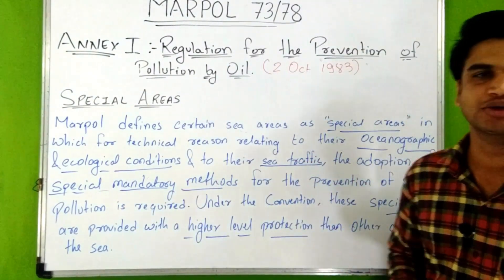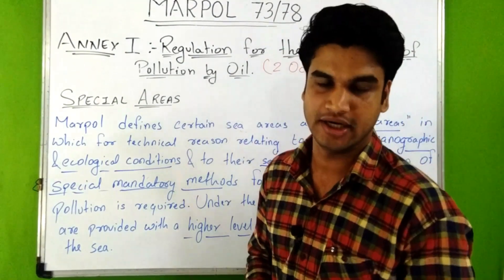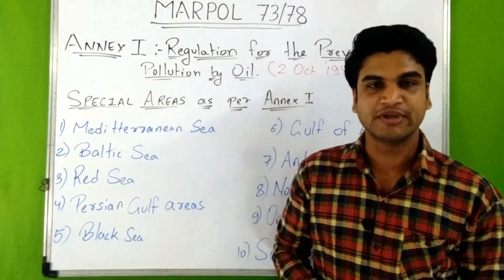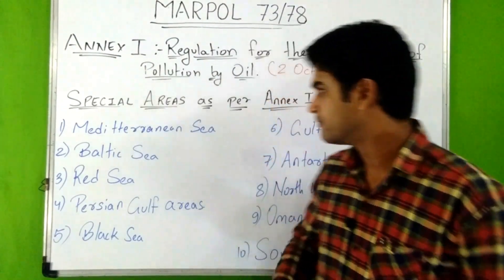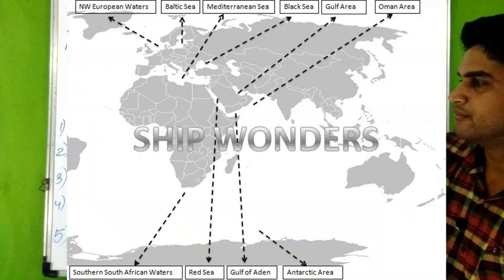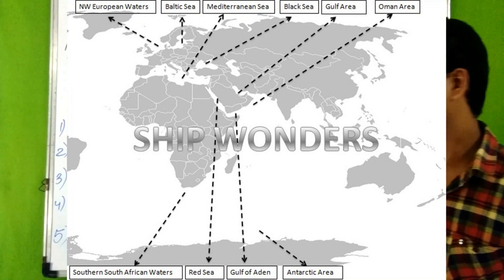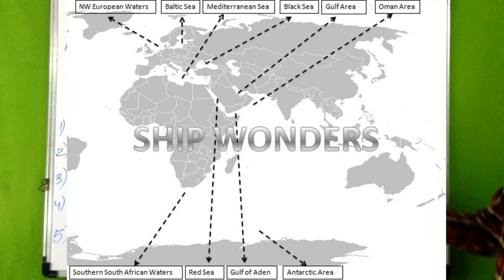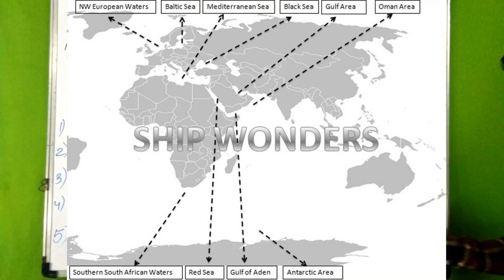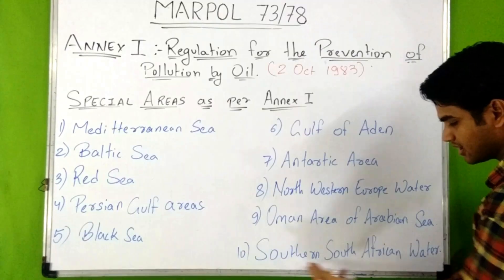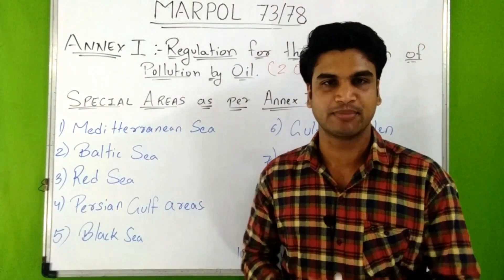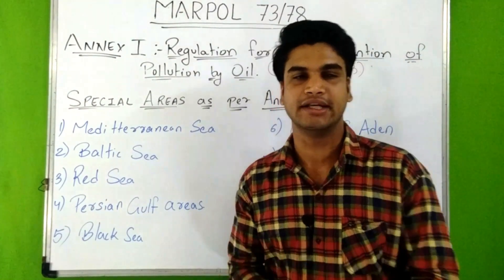The special areas under Annex 1 are: the Mediterranean Sea, Baltic Sea, Red Sea, Persian Gulf, Black Sea, Gulf of Aden, Antarctic Area, Northwestern European Waters, Oman Area of the Arabian Sea, and Southern South African Waters.